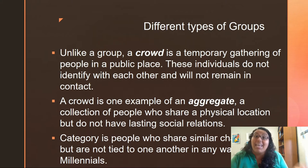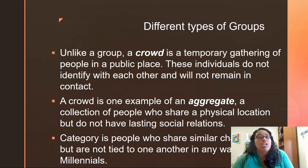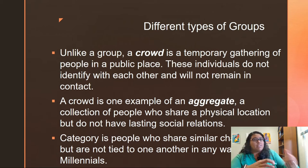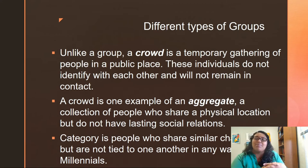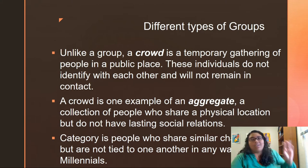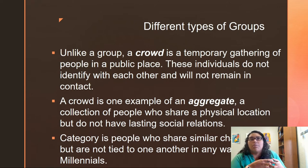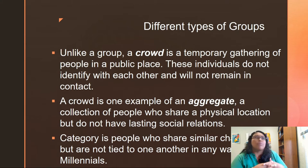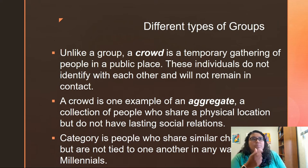Then you have another type, which is a category — people who share similar characteristics but are not tied to one another in any way. Something like millennials: we have this grouping of people, and people are always talking about them, like 'oh, these millennials ruined avocado.' Similar characteristics tied to age group and maybe use of technology, but it's not like all of us are really going to be interacting with all the millennials in the country.